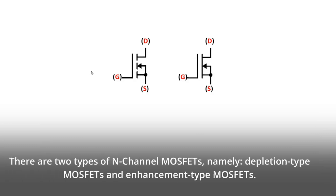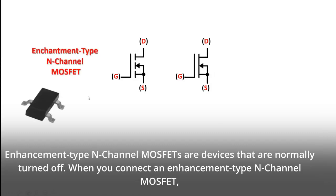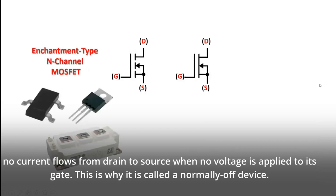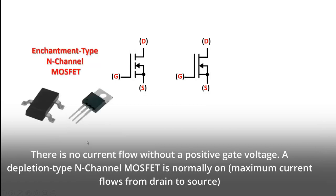On the other hand, a P-channel MOSFET is composed of majority holes as current carriers. There are two types of N-channel MOSFETs, namely depletion-type MOSFETs and enhancement-type MOSFETs. Enhancement-type N-channel MOSFETs are devices that are normally turned off. When you connect an enhancement-type N-channel MOSFET, no current flows from drain to source when no voltage is applied to its gate. This is why it is called a normally off device. There is no current flow without a positive gate voltage.